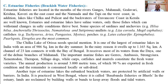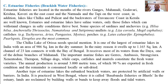The third type of fisheries is brackish water or estuarine fisheries. Estuarine fisheries are located at the mouths of rivers such as the Ganga, Mahanadi, Godavari, Krishna, and Kaveri on the east coast, and the Narmada and Tapi on the west coast, where river water meets the sea.